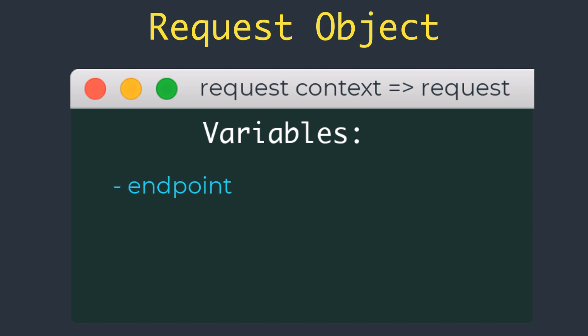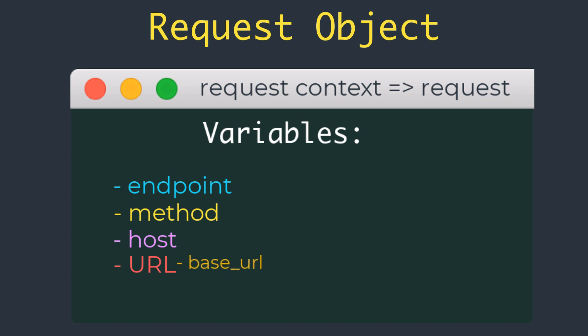Here are some important variables available through the request object: endpoint — the name of the Flask endpoint handling the request, using the view function name; method — the HTTP request method such as GET or POST; host — the host defined in the request including the port number if given; url — the complete URL requested by the client; base_url — same as url but without the query string component; and environ — the raw WSGI environment dictionary for the request.